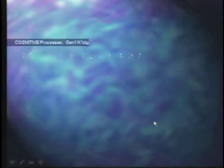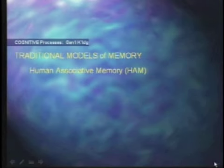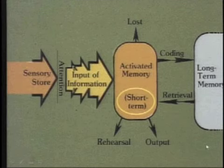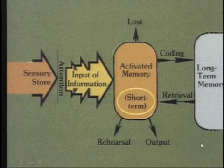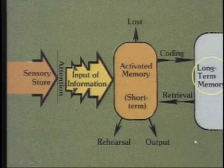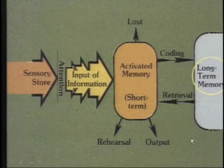Let's put that into the more general category regarding knowledge. The first model we looked at was the human-associated memory model, which processes information in terms of a sensory store as initial input. If that information is attended to, it goes into short-term storage, which is activated. As long as you rehearse it, the information remains available, and through that rehearsal you can put it into long-term memory. It's essentially a length-of-storage model.